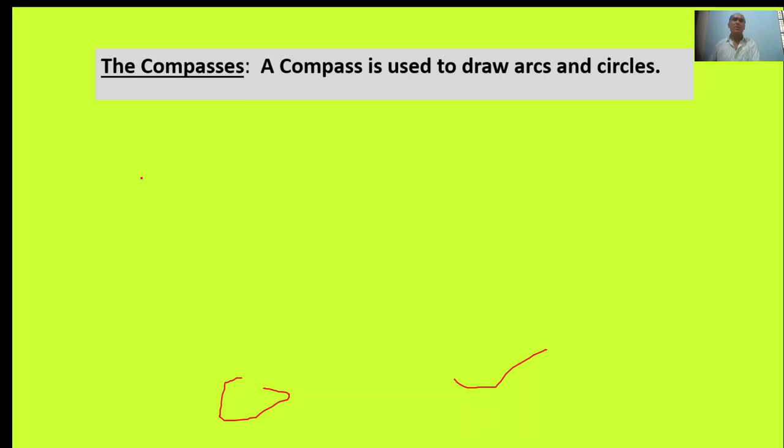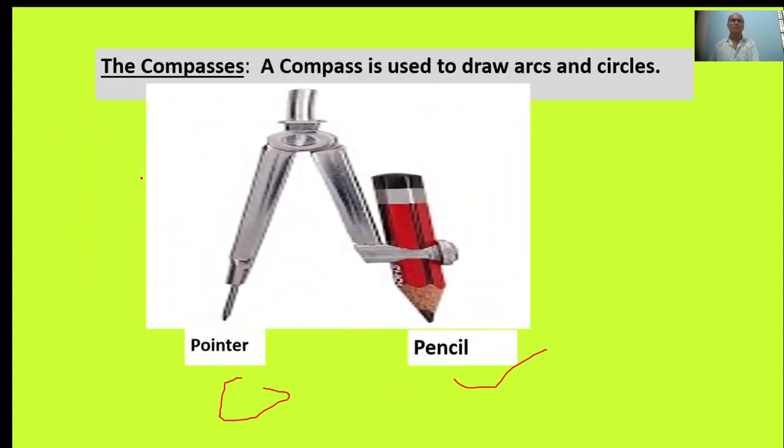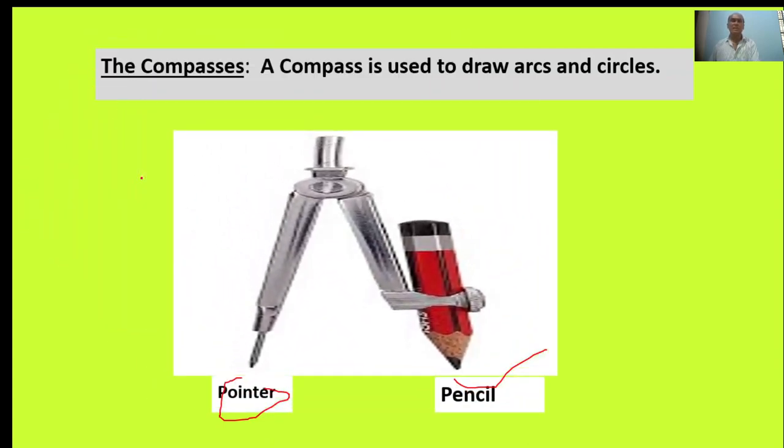Next, the compasses. A compass is used to draw arcs and a circle. Here, an image is given. This is called compasses with a pointer and pencil user.